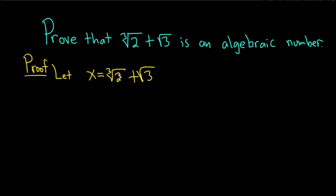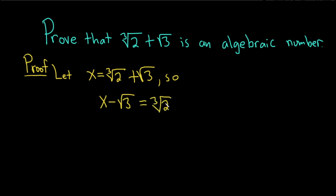Let's start by trying to get rid of the cube root. We'll subtract the square root of 3 from both sides, and that will leave us with x minus the square root of 3, which is equal to the cube root of 2. Now in order to eliminate the cube root, we can cube both sides.